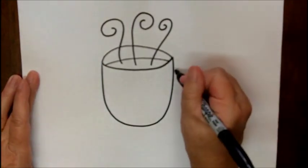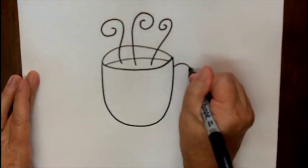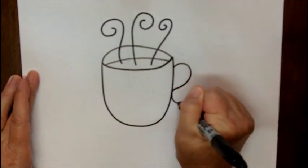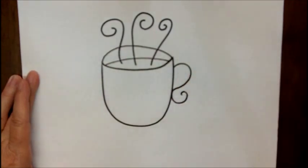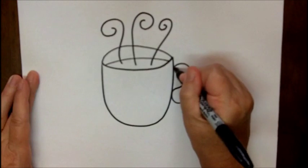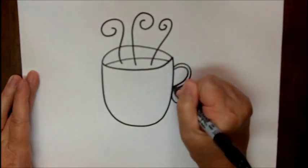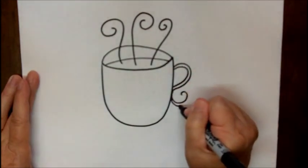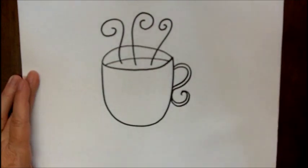Now we're going to make a handle. You can make this as fancy as you want or as simple as you want. You can even double it. Mine is just a backwards S.